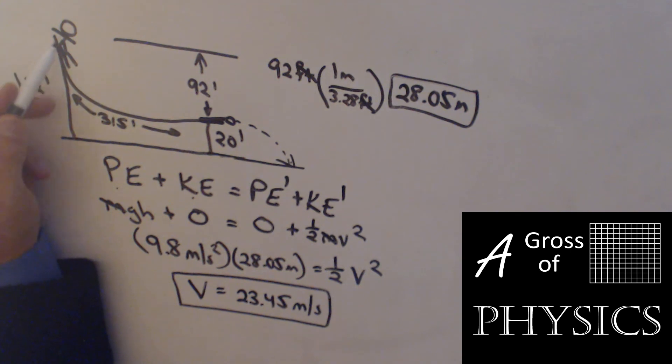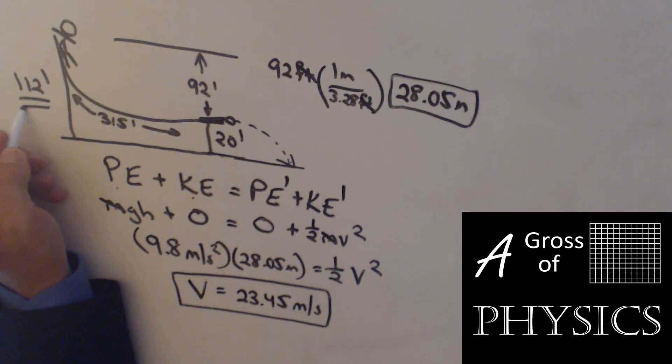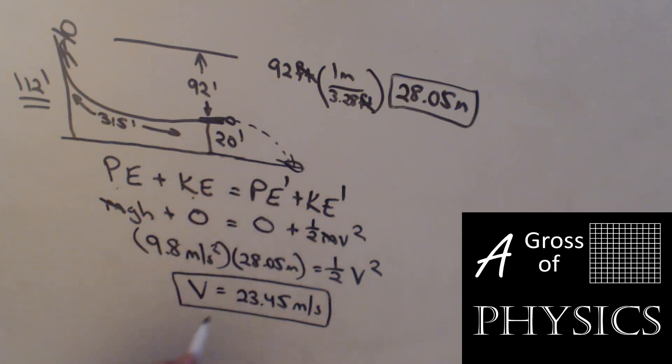We don't have to worry about the fact that this is curved at all. We don't have to worry about the fact that we don't land on the ground. If we land on the ground, we can look at a different problem, and we would use 112 as the starting point and say the ground is zero. But for this problem, we're looking at how fast they leave the ski jump itself: 23.45 meters per second.